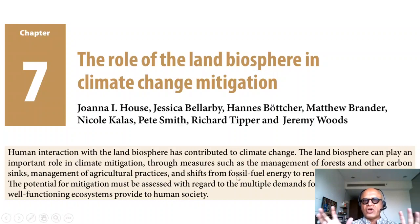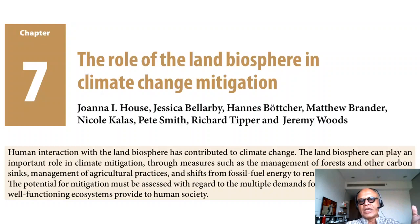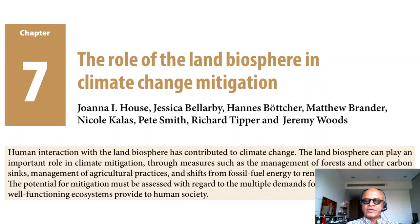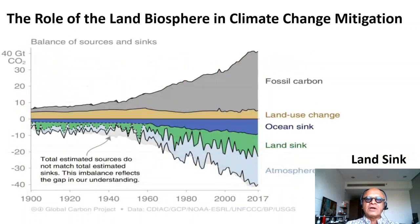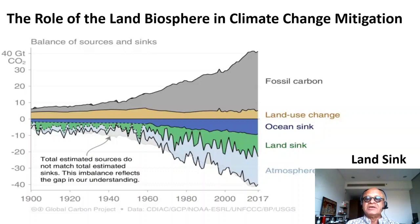The potential for mitigation has to be looked at in the context of all the other demands for land use change. The land biosphere offers many so-called ecosystem services. If you want to do biofuels, for example, how is it going to impact land use and food security? How is it going to affect water use? Ecosystem services that well-functioning ecosystems provide to humanity have to be considered in terms of climate mitigation, and we also have to ask who is going to be impacted by any plan for mitigation.